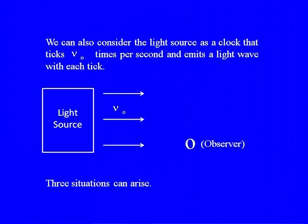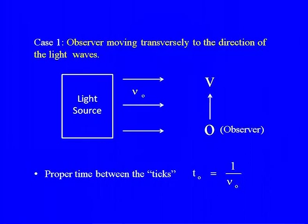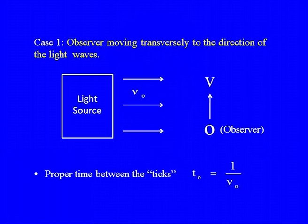Now let us see what happens if you have the light source emitting a certain frequency and the observer starts moving. We can have three situations: either the observer is moving transversely or perpendicular to the direction of these light waves, or it is moving towards the light source, or it is moving away. Let us consider each of them one by one. Case number one: the observer O is moving uniformly with a certain velocity V transverse to the direction of the light waves.